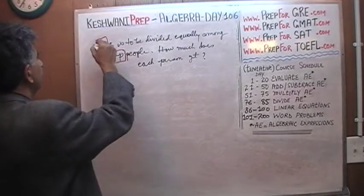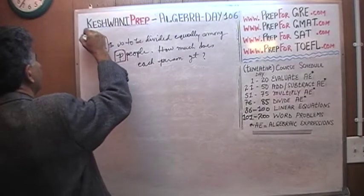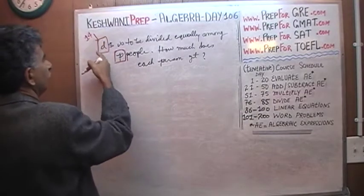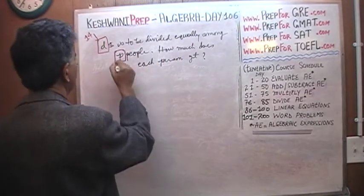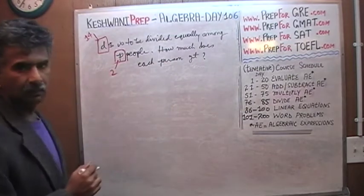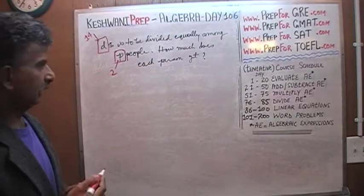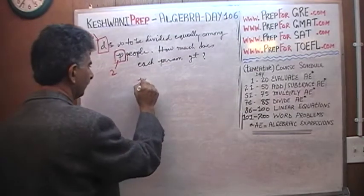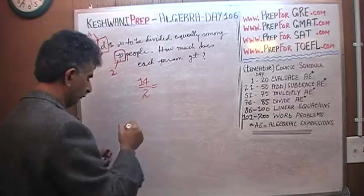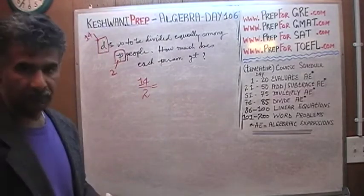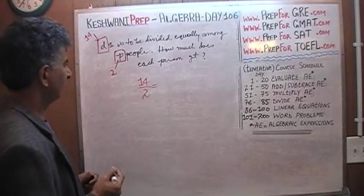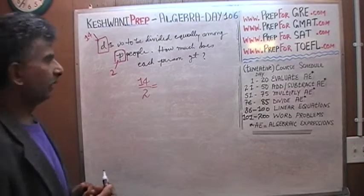Let's plug in. If we say, for example, if 14 dollars is to be divided equally among two people, how much does each person get? Well, 14 over 2, obviously. 14 over 2. Exact same logic will apply when we're dealing with the algebra problem.